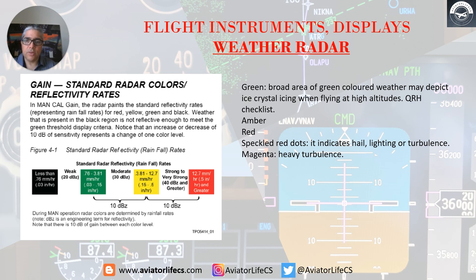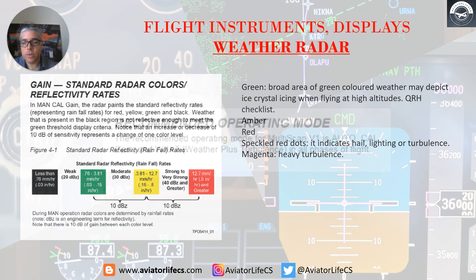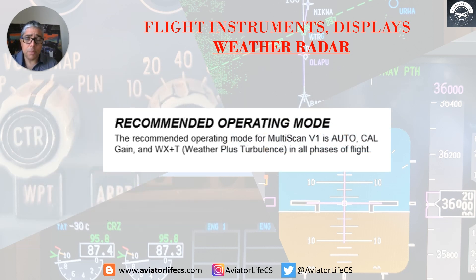We have the standard radar colors which represent the rainfall rates. For example, the green color at high altitudes could represent ice crystallizing. We have amber, red, then speckled red dots which indicate hail, lightning, or turbulence, and magenta which indicates heavy turbulence. The recommended operating mode is auto, calibrated gain, weather plus turbulence in all phases of flight.